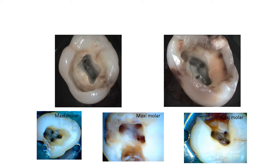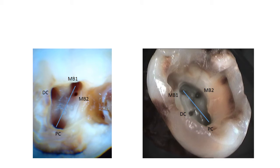The MP2 canal may be very close to MP1 or located farther away. Looking at the figures, it is always mesial to the line joining MP1 and the palatal canal. So the line joining the palatal canal and MP1 defines the region — MP2 is always mesial to this line, but may be close to MP1 or farther away. That is roughly the area where you have to search.